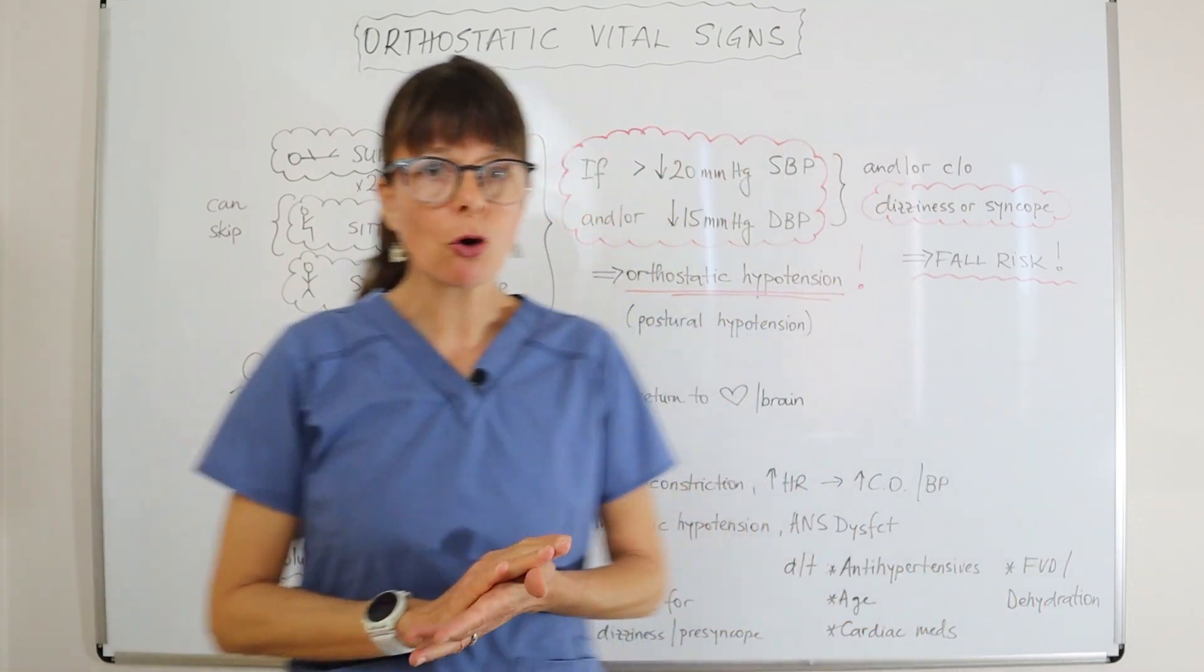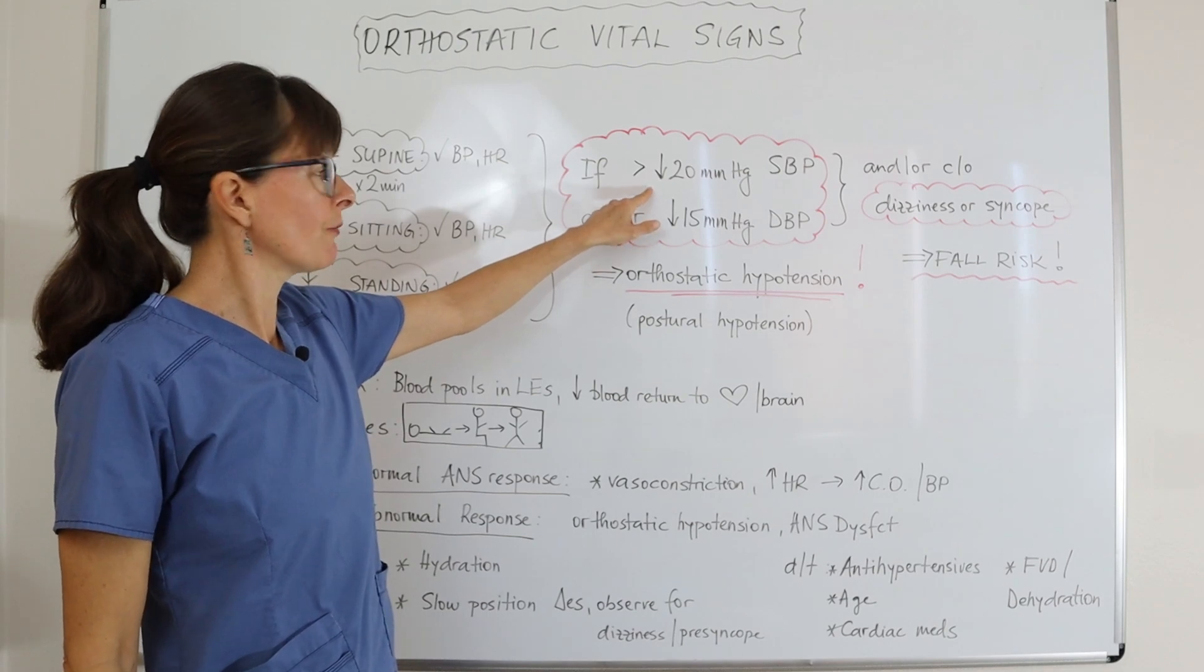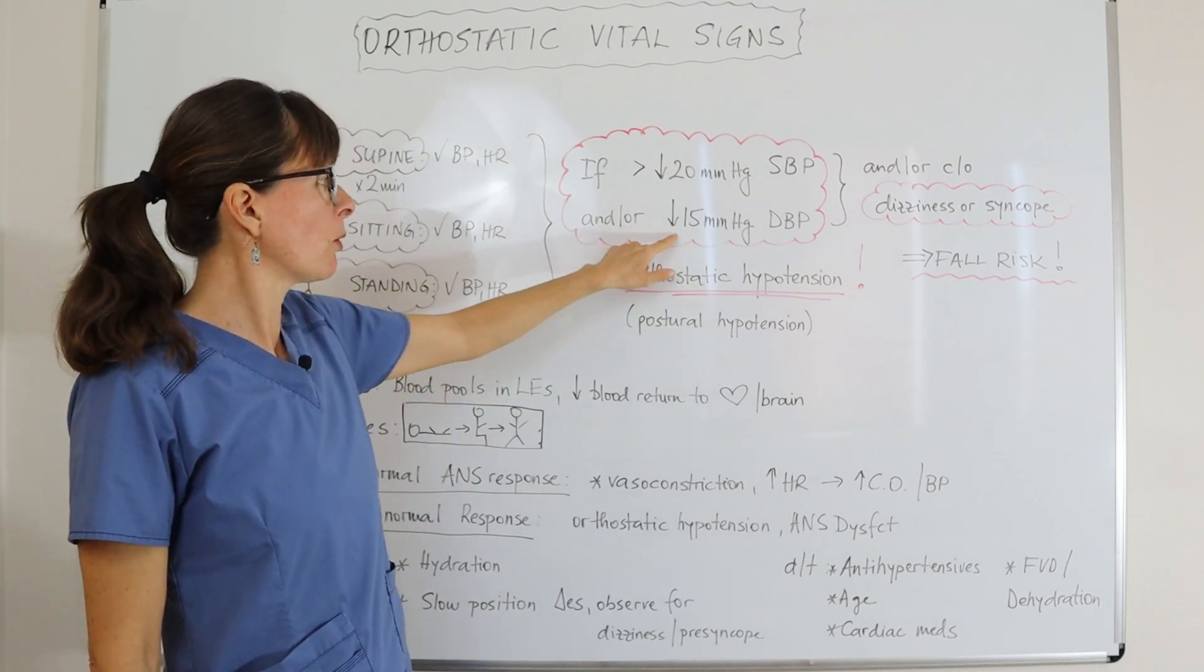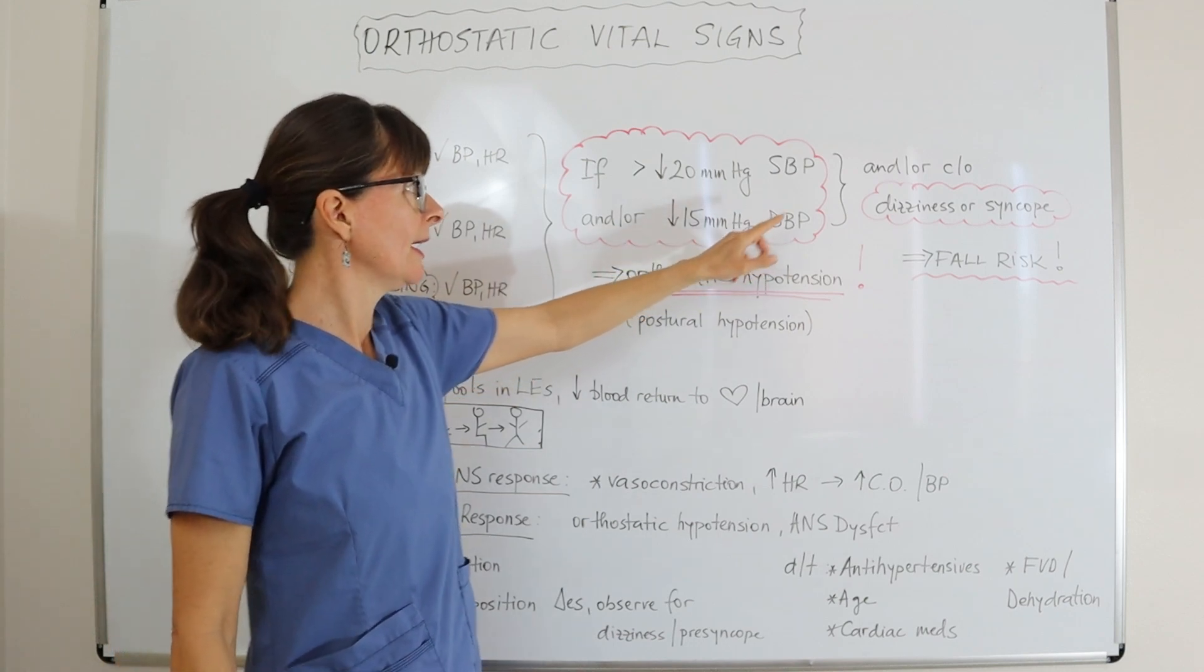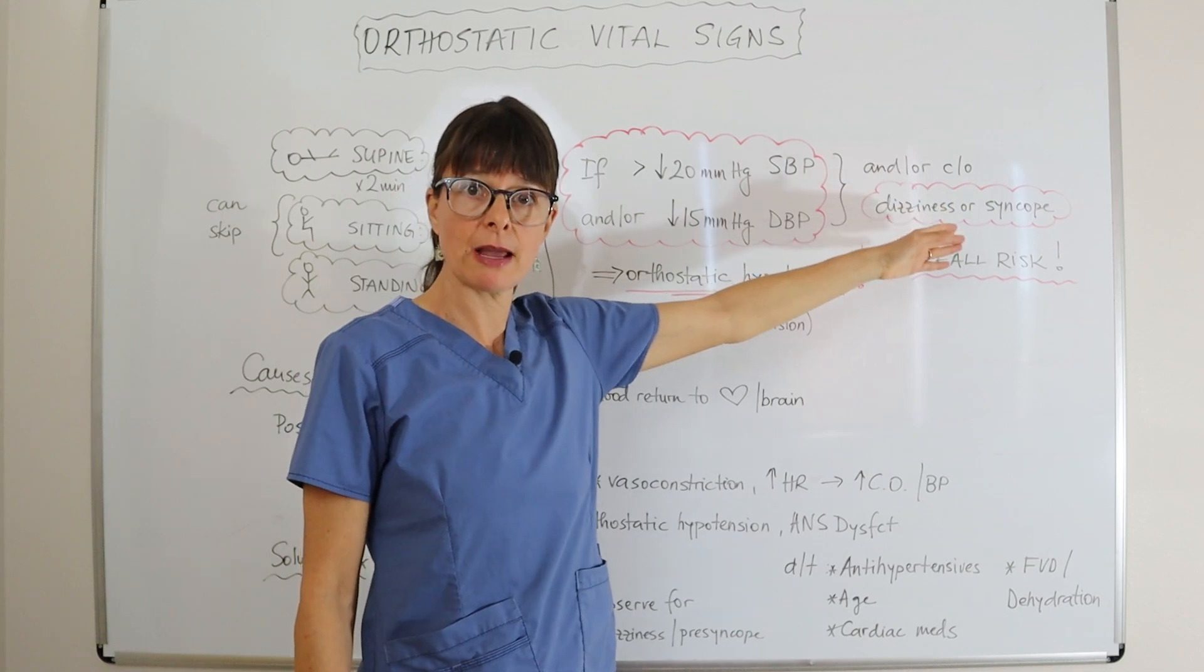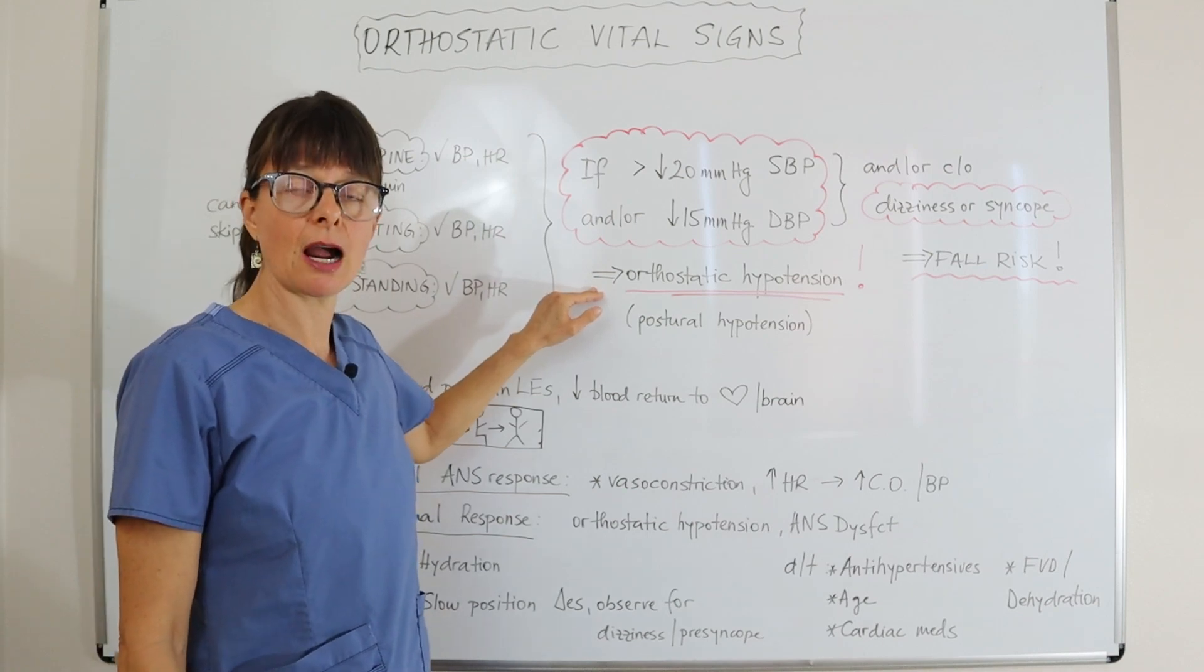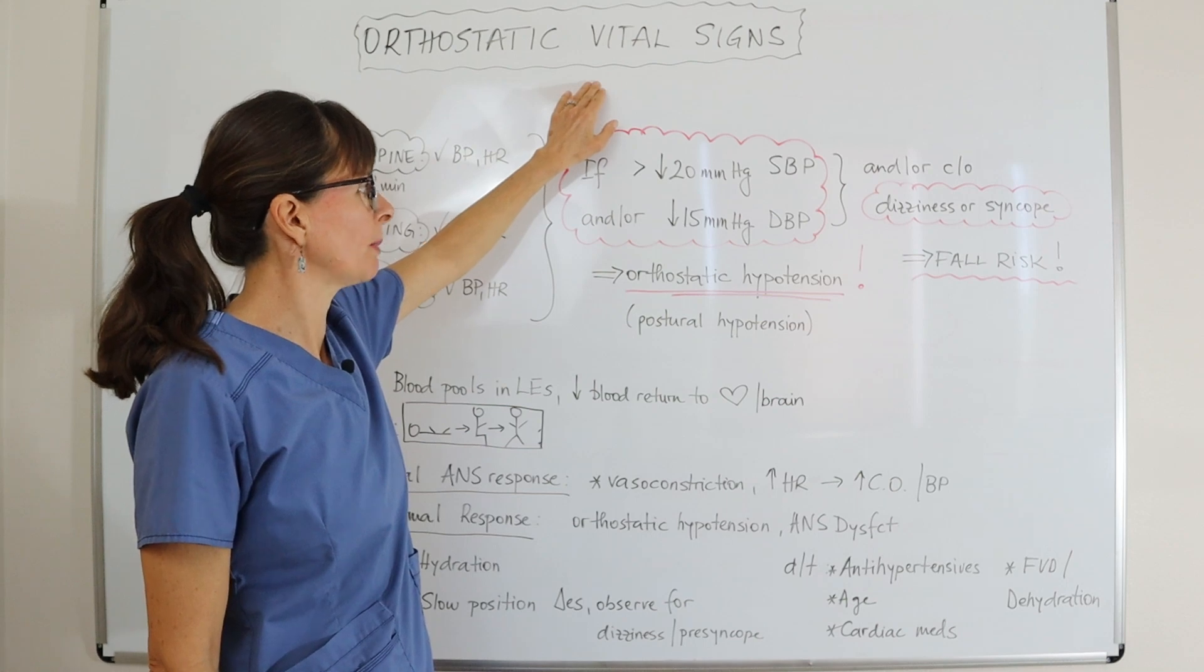As we're collecting the data, if there is a drop of more than 20 millimeters of mercury in systolic blood pressure and or more than a 15 millimeter of mercury drop in the diastolic blood pressure, and or the patient complains of dizziness or has an episode of syncope, meaning they pass out, then this is considered orthostatic hypotension.